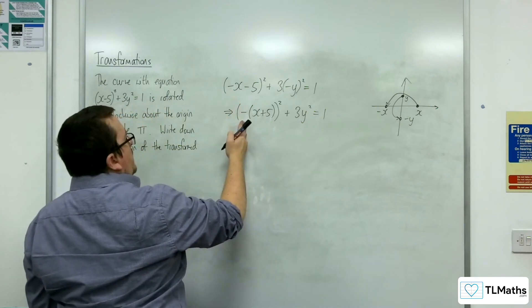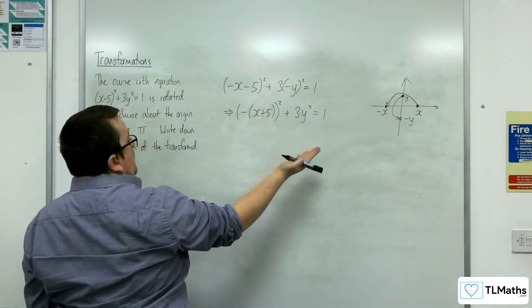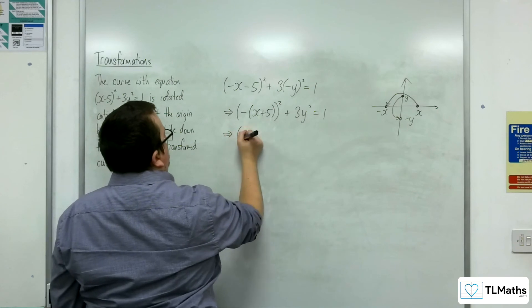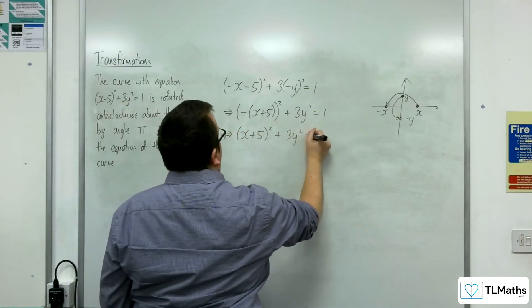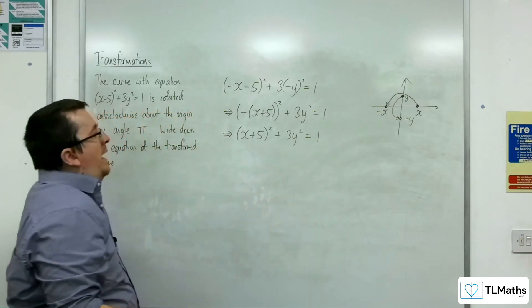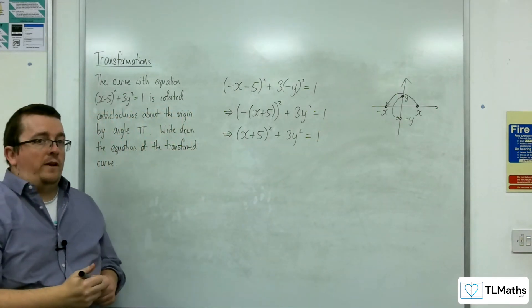The minus is just -1 and I'm squaring it, which gets you 1. And so I'd write that as (x + 5)² + 3y² = 1. And so that would be the equation of my transformed curve.